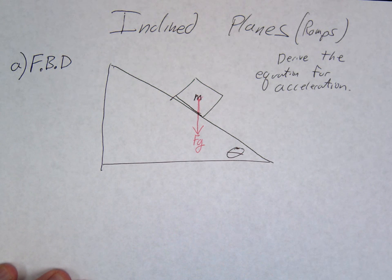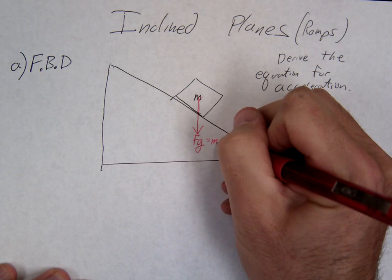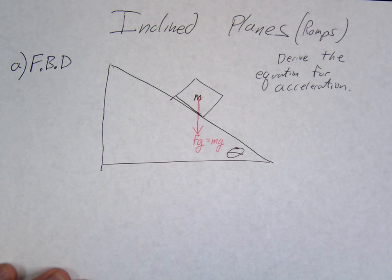You can call this FG. You could call this weight. You could call this MG. Because remember, FG is equal to MG.